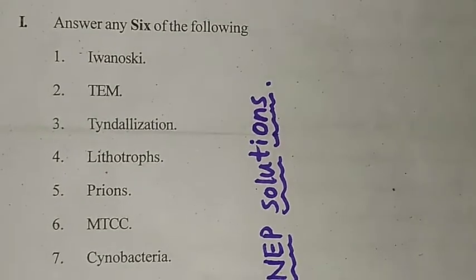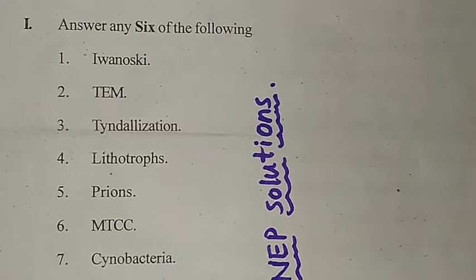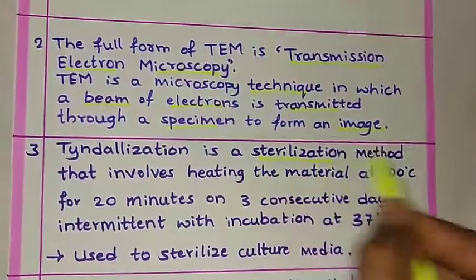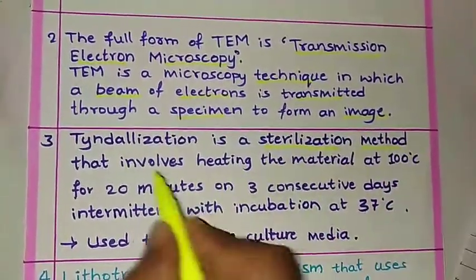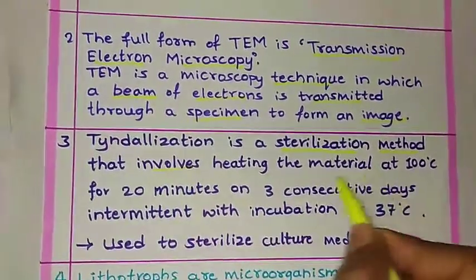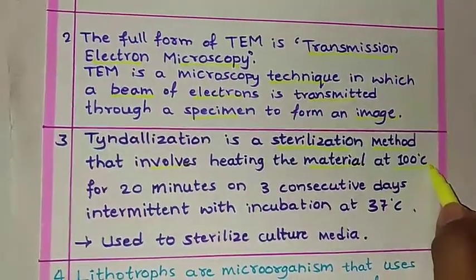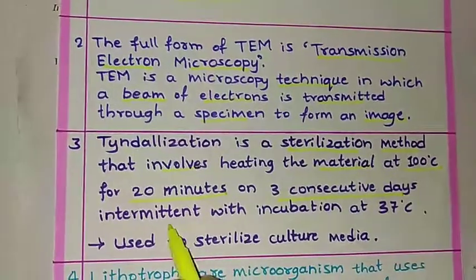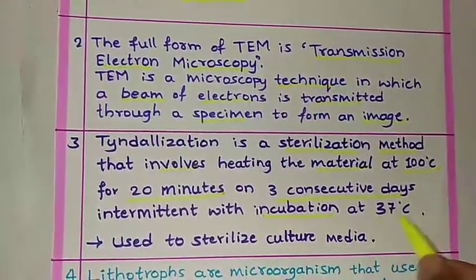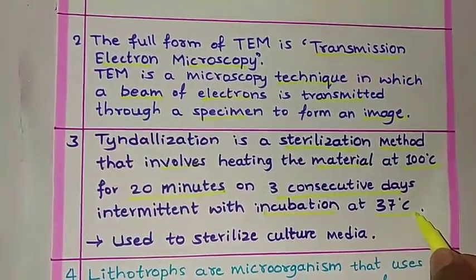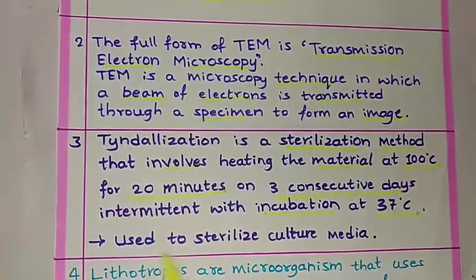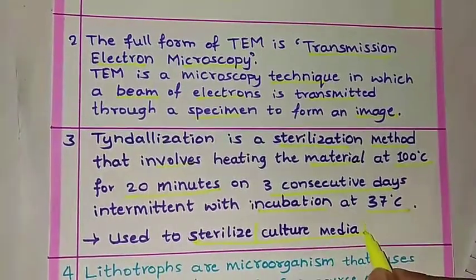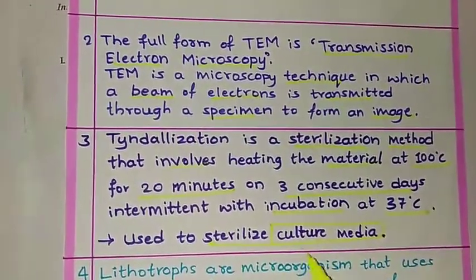The third question is about tindalization. Tindalization is a sterilization method that involves heating the material at 100°C for 20 minutes on three consecutive days, intermittent with incubation at 37°C. It is used to sterilize culture media. Culture media has a separate lesson or chapter on this topic.